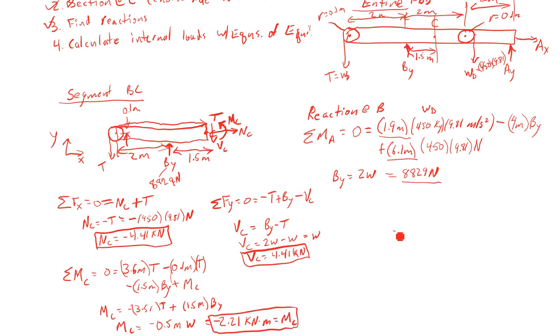So summary of these internal loads. My normal force at C is negative 4.41 kilonewtons. My shear at C is 4.41 kilonewtons. And my bending moment at C is negative 2.21 kilonewton meters.